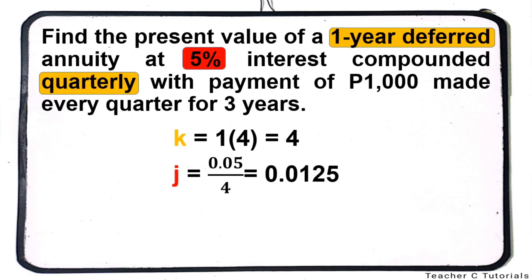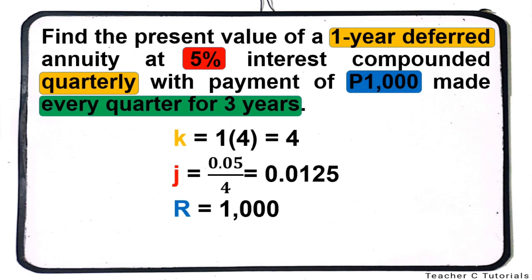Then the regular payment is 1,000 pesos. And lastly, N, the number of payments. Since the payment is done every quarter for 3 years, 4 times 3, there are 12 payments in all.